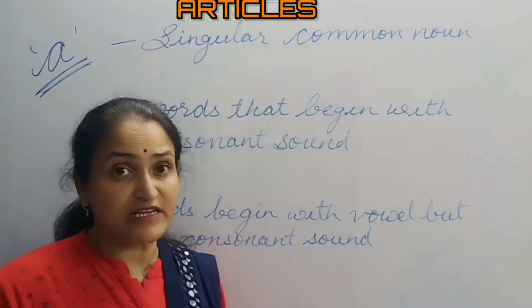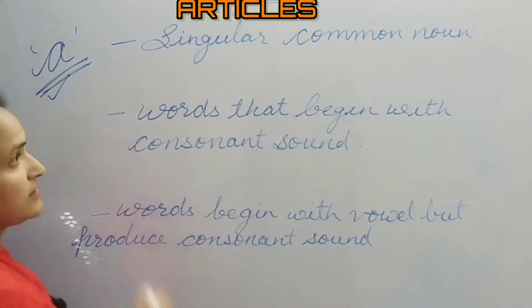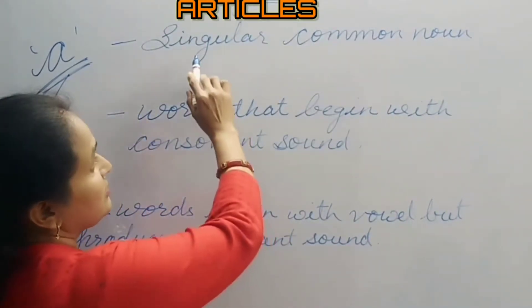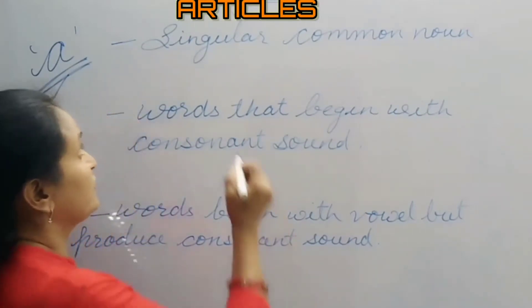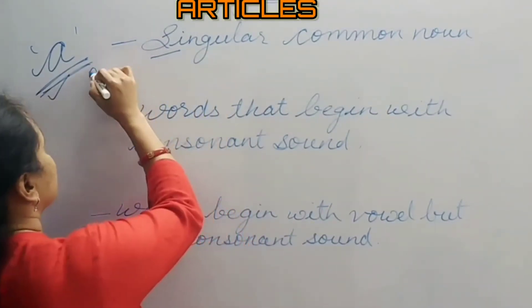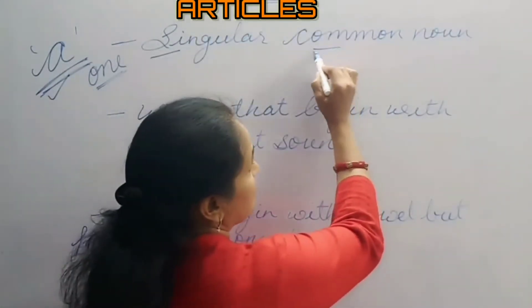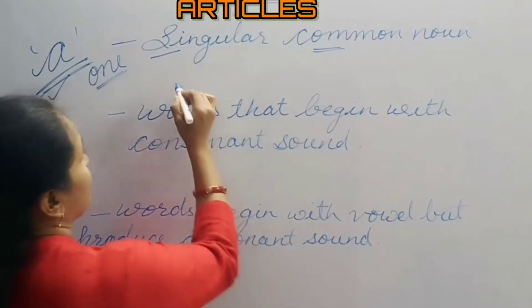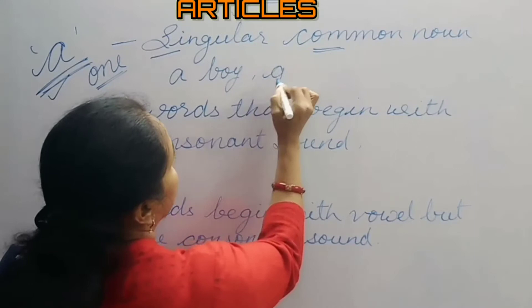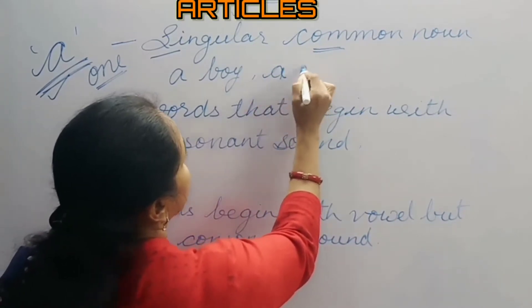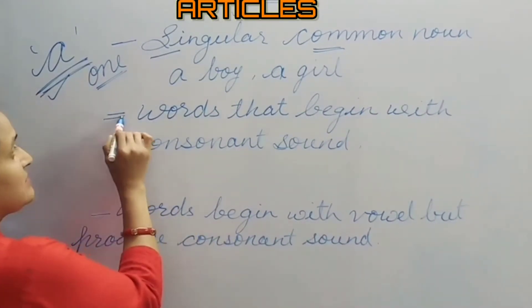Now children, we will learn the use of article 'a'. Article 'a' is used before a singular common noun — singular meaning it denotes one. For example: a boy, a girl.